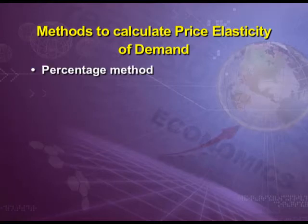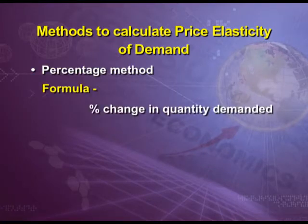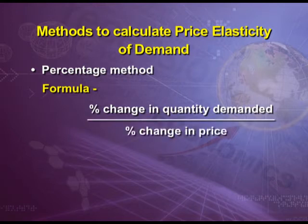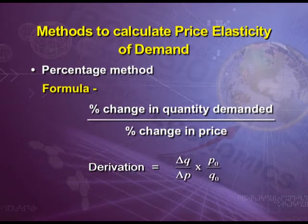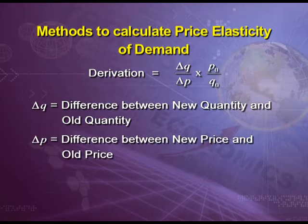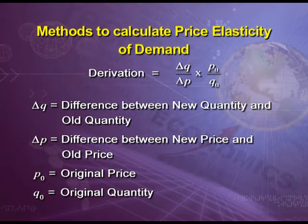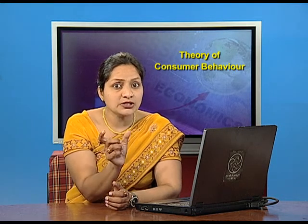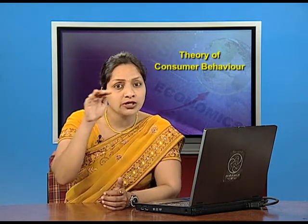Methods to calculate price elasticity of demand. The first method is the percentage method. Its formula is: percentage change in quantity demanded divided by percentage change in price. The derivation is: (ΔQ / ΔP) × (P₀ / Q₀), where ΔQ is the difference between new quantity and old quantity, ΔP is the difference between new price and old price, P₀ is the original price, and Q₀ is the original quantity. For income elasticity, the denominator changes to percentage change in income, but the numerator remains the same.